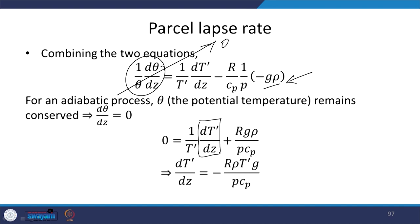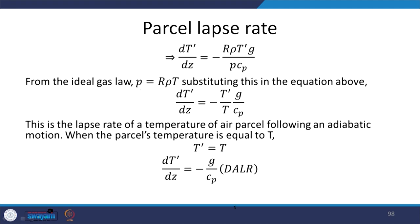We substitute the hydrostatic relation into the expression, so dT prime by dz becomes R times rho times T prime. From the ideal gas law, pressure P equals R times density times temperature. Substituting this, dT prime by dz equals T prime over T times G over Cp. We know that minus G over Cp is called the dry adiabatic lapse rate.